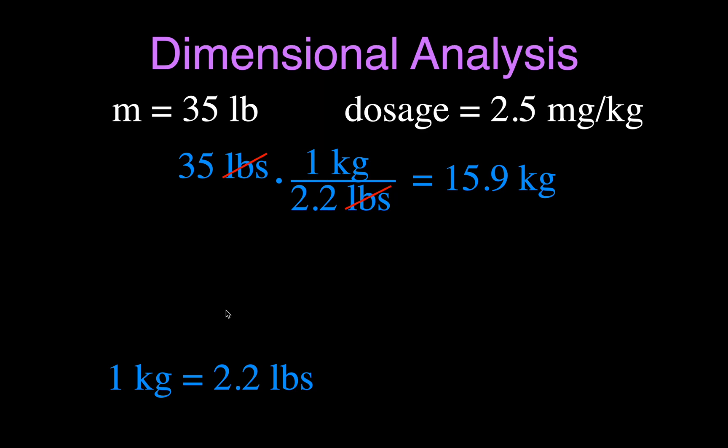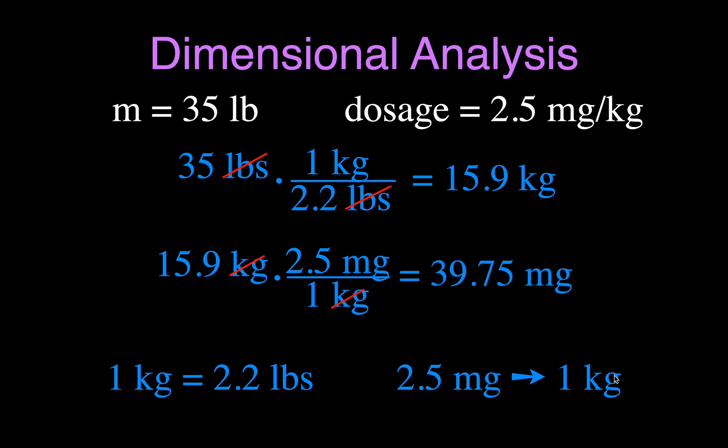And, therefore, now we can figure out how much medicine we have to give, because we know we will have to give 2.5 milligrams per kilogram. I didn't put an equal sign here, because these two things are not equal, but it's 2.5 milligrams per kilogram. We want to convert, and we want to get rid of the kilogram, so the kilogram goes on the bottom, and you can cancel. Therefore, you can see we give 39.75 milligrams for that dosage, for that 35-pound person.